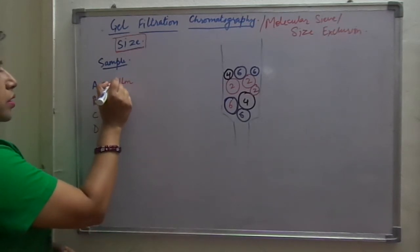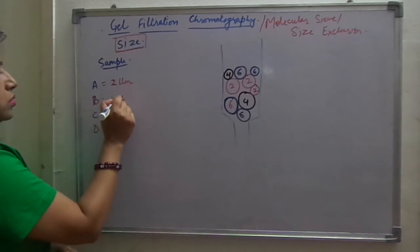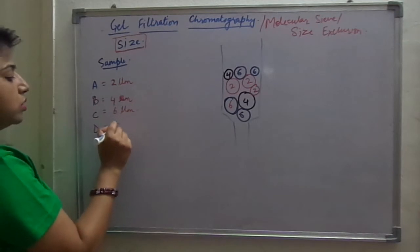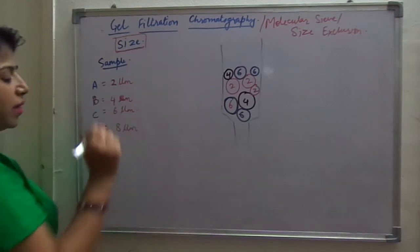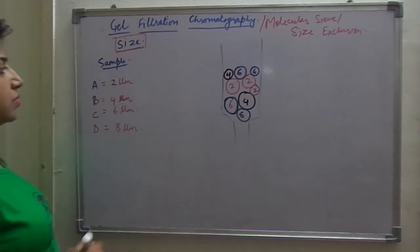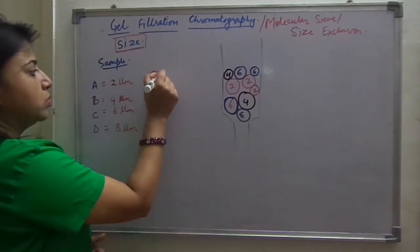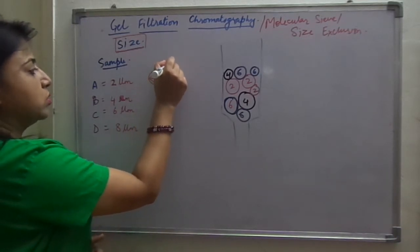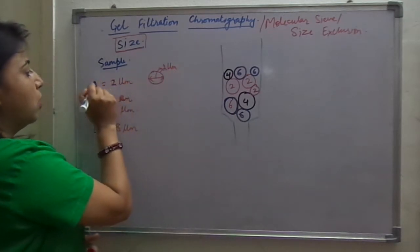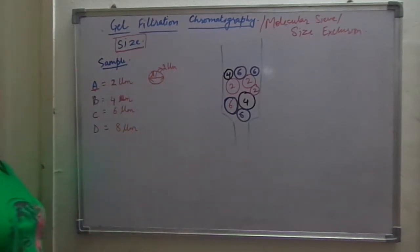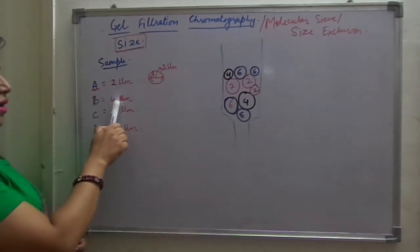Component number 1 is 2 micrometre, second is 4 micrometre, third one is suppose 6 micrometres and fourth one is suppose 8 micrometres. By size, I mean the diameter. Suppose this is the component, so 2 micrometre is the diameter of A, suppose it is the A component. 4 micrometre is the diameter of B, 6 of C and D.